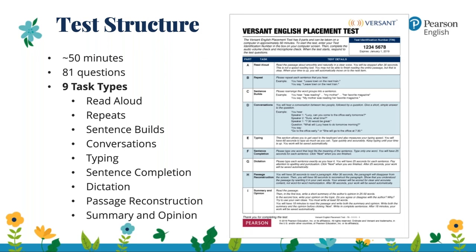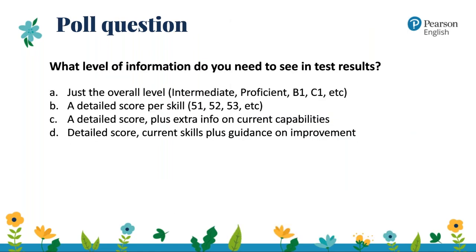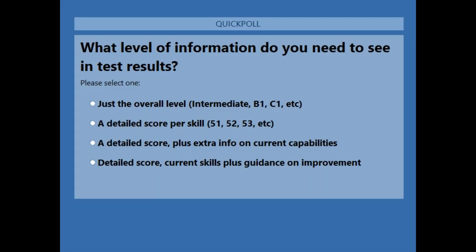Although those item types are fixed, the tests that learners will see are randomised from a massive bank of calibrated items. We have a poll question here: what level of information, as a teacher, school, or university, do you want to see in test results? A — just the overall score; B — a detailed score per skill; C — a detailed score plus extra information on current capabilities in words; or D — a detailed score, current skills, plus guidance on improvement.